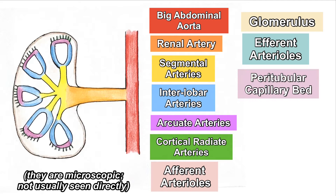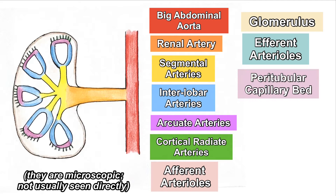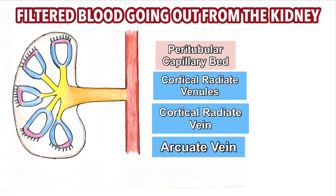It goes from the peritubular capillary bed to the cortical radiate venules, back to the cortical radiate vein, then arcuate vein, to the interlobal vein, segmental vein, renal veins, and lastly the vena cava.